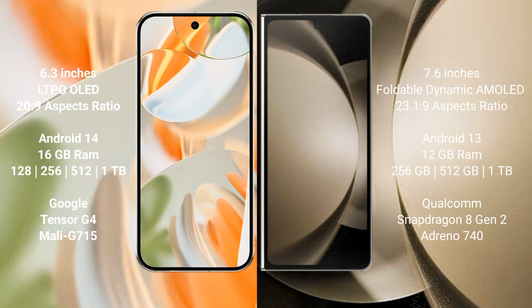Google Pixel 9 Pro runs on the Android 14 operating system. Samsung Galaxy Z Fold 5 runs on the Android 13 operating system. Google Pixel 9 Pro offers 16GB RAM with 28GB, 256GB, 512GB, and 1TB internal storage options.